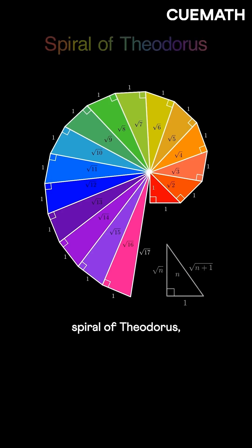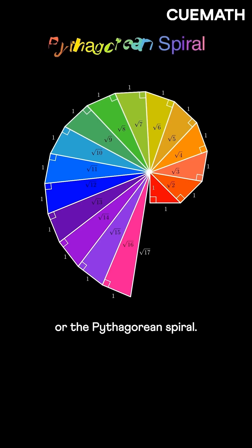This forms the captivating spiral of Theodorus, also referred to as the square root spiral, or the Pythagorean spiral.